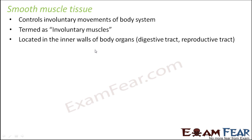Throughout the digestive tract, if you remember when we discussed the digestive system, I told you that a process called peristalsis takes place inside the digestive tract. When the food moves down the food pipe, peristalsis takes place — that is the contraction of the muscles present on the walls of the digestive tract — and because of that the food is propelled downwards. This movement occurs in the food pipe, stomach, and intestine.